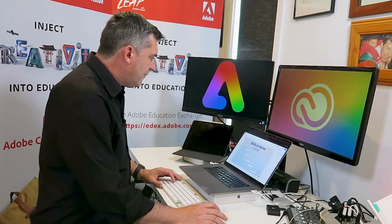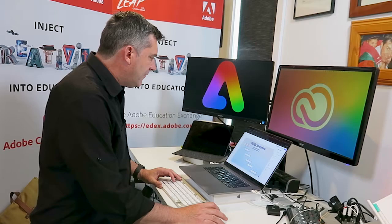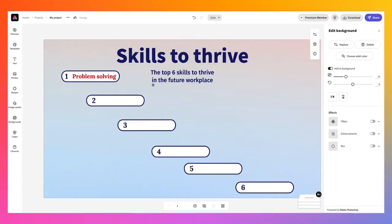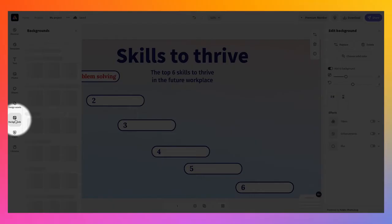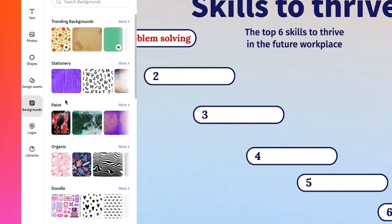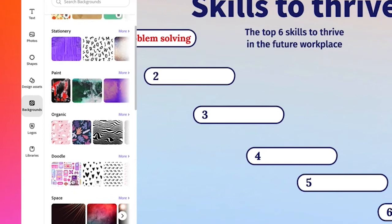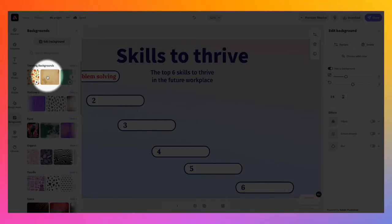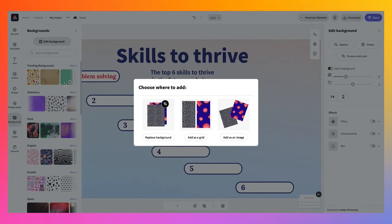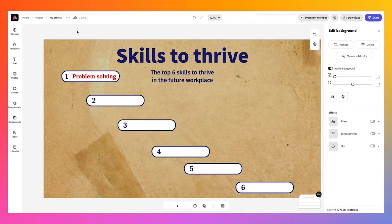Before I go any further, I want to readjust the background before adding more content. If I skip the photos, shapes and design assets and go right down to the background section, when I click on backgrounds there's a whole range of different trending backgrounds — stationary, paint, organic, lots of different options. If we click the more button, we get a whole range. I quite like this one here. As I click on it, I can choose to replace the background, add as a grid, or add as an image — I'm just going to replace the background. And now I've got that beautiful trending background sitting behind my infographic.